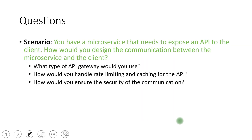The final scenario: you have a microservice that needs to expose an API to a client — how do you design the communication? For the API gateway, it depends — you can use open source options or cloud-provided ones like AWS API Gateway or Google Cloud's, or Apache. Rate limiting and caching can be applied at the API gateway level. For security, it depends on your implementation. Try to build a demo project around these scenarios so you can answer confidently in interviews.